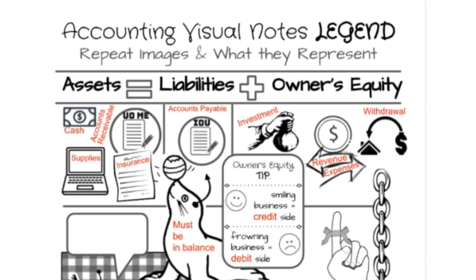Lastly, for the accounting equation, it must always be in balance. So if you increase an asset, you need to either decrease another asset, or increase a liability or owner's equity. Lots more on that in future videos, but remember that the accounting equation must always be in balance.